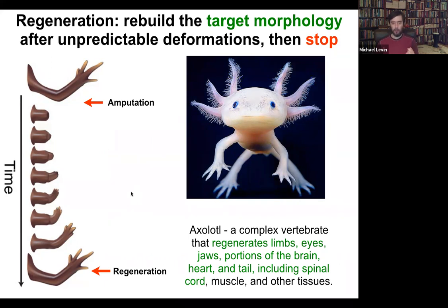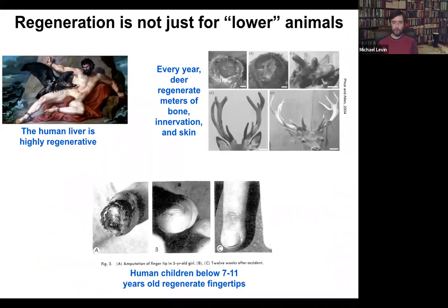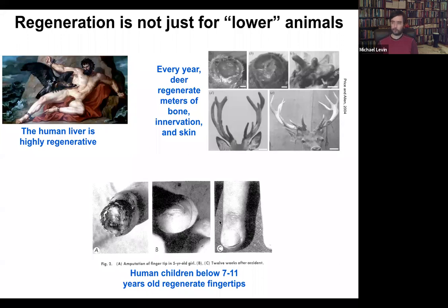It's important to note this is not just some weird quirk of salamanders. Human mammals can do some of this — the human liver is highly regenerative, that's been known for a long time. Deer regenerate huge amounts of bone, up to a centimeter and a half of new bone per day — bone, vasculature, innervation, skin. And even human children can regrow fingertips. Usually it stops at a particular age, but if you just keep it clean, the amputation will give rise to a cosmetically perfect finger.